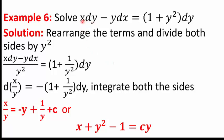In question 6, we solve X dY − Y dX = (1 + Y²)dY. With a minus sign between X dY and Y dX, we need Y² or X² in the denominator. Dividing by Y²: (X dY − Y dX)/Y² = (1 + 1/Y²)dY. Pulling out the minus sign from the left side gives −d(X/Y) = (1 + 1/Y²)dY. Integrating both sides, the solution simplifies to X + Y² − 1 = CY.